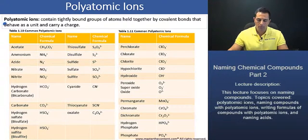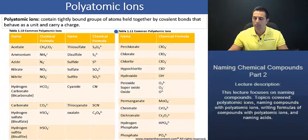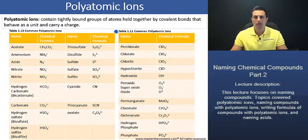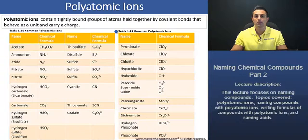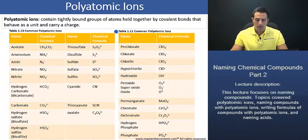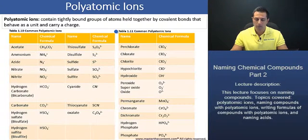In table 1.10 and table 1.11, we're given the common polyatomic ions. Now, the bad news with polyatomic ions is that there is no system to name them as we had with binary compounds thus far. You're just going to have to memorize the most common ones. However, for multiple choice scenarios, I will go over the tables here to point out some of the prevalent features.